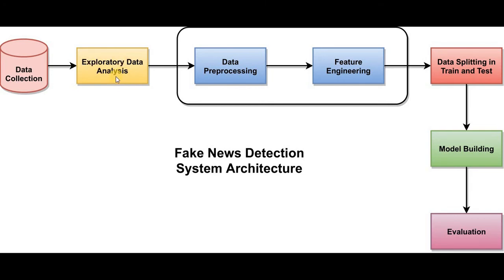The next step is data pre-processing, or data cleaning. In this step, we will eliminate all the textual data which might not be helpful in discriminating between fake news and genuine news. This includes removing all stop words, removing any HTML or markup language text available in the data, and eliminating all those words which we might not require in order to discriminate between fake news and real news. We will be doing this step by step in the next part of this video.